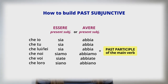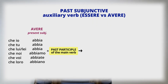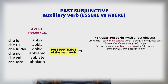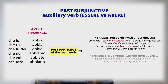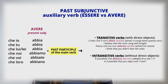The present subjunctive of 'essere': che io sia, che tu sia, che lui sia, che noi siamo, che voi siate, che loro siano. The present subjunctive of 'avere': che io abbia, che tu abbia, che lui abbia, che noi abbiamo, che voi abbiate, che loro abbiano. The rules for choosing 'avere' versus 'essere' are always the same as for other past tenses. 'Avere' is the auxiliary for transitive verbs — verbs with an object where you can ask 'what' or 'who.' For example: 'credo che il coro abbia cantato bene questa sera'; 'penso che voi non abbiate sentito le notizie.'